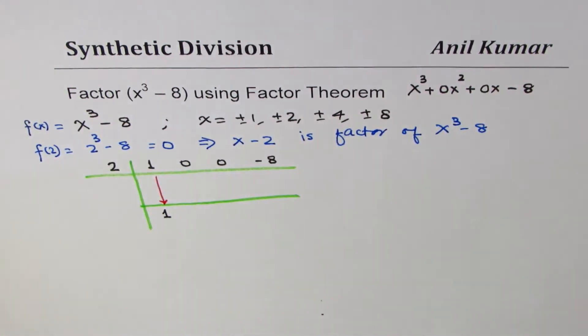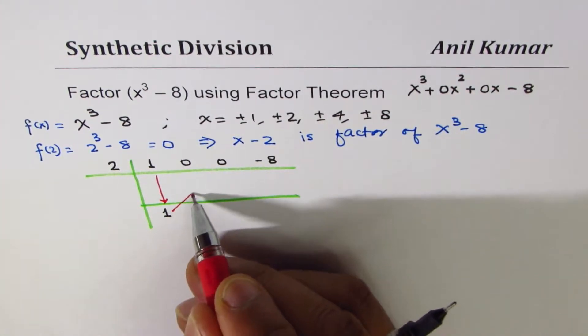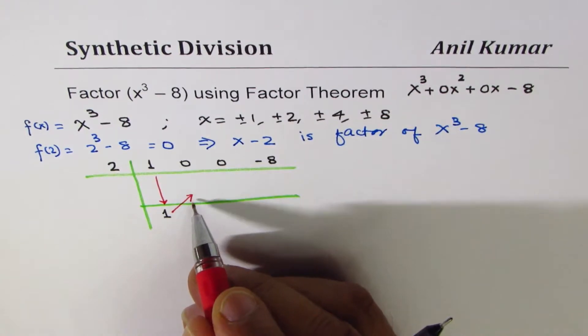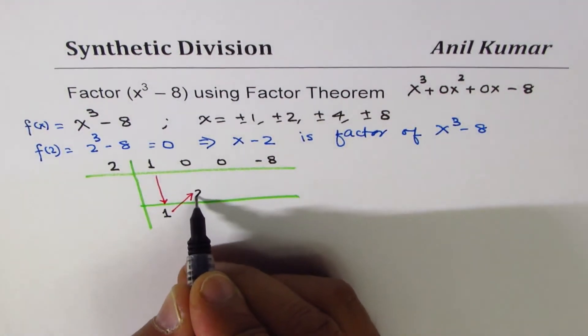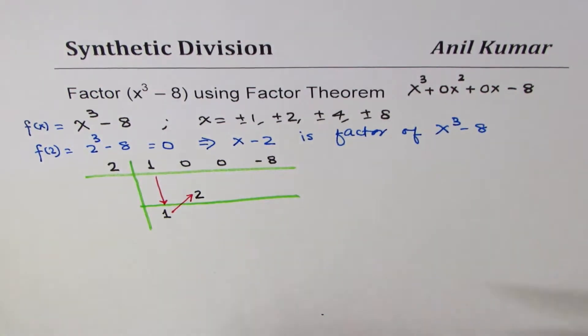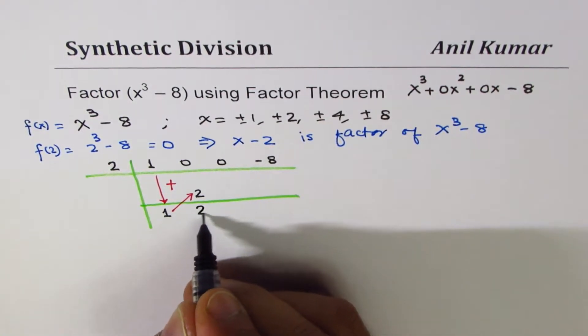Now, we'll multiply by 2, this number, and place it under the second coefficient. So 2 times 1 is 2, and then we'll apply addition. So we'll add. So what is 0 plus 2? 0 plus 2 is 2.